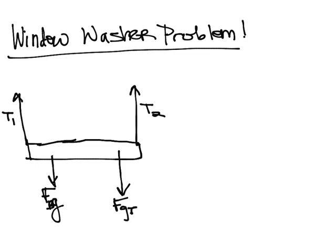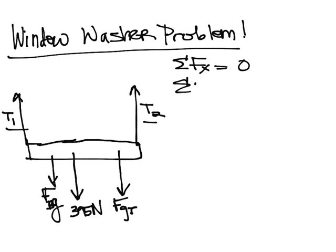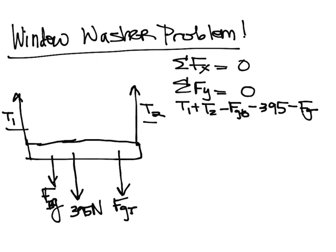We know that overall the board has a weight or an FG of 395 newtons. So we want to know what are these tensions, T1 and T2. And since this is in rotational equilibrium, we know that sigma Fx equals 0. There are no X forces, so that really doesn't matter. We know sigma Fy equals 0. And we can write that T1 plus T2 minus Fg Bob minus 395 minus Fg Joe equals 0. So we have all of our up minus all of our down, and that's equal to 0.